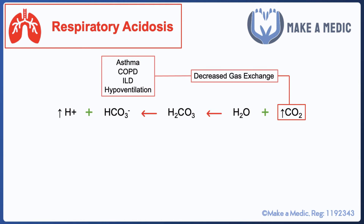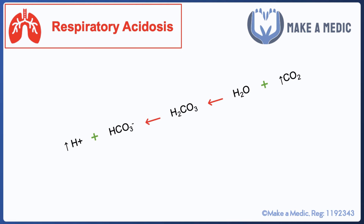Because this is a reversible equation, an increase in the partial pressure of carbon dioxide will shift the equilibrium, leading to an increase in the availability of protons, which in turn makes the pH go down. In an acute respiratory acidosis, we try to resolve this by facilitating the removal of carbon dioxide — for example by ventilating the patient.